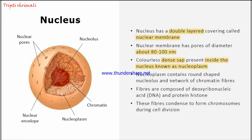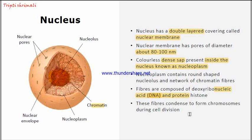We can see the nucleolus in the diagram — it is the darkly stained structure. The nucleoplasm also contains a network of chromatin fibers. These chromatin fibers are composed of DNA and histone protein. Do remember that these fibers are composed of histone protein and DNA.